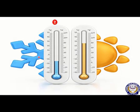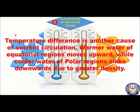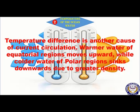Number two: temperature of the ocean water. Temperature difference is another cause of current circulation. Warmer water of equatorial regions moves upward, while colder water of polar regions sinks downwards, because warm water is lighter compared to cold water. Cold water is denser, so it sinks downwards due to greater density.